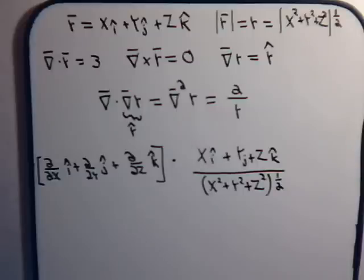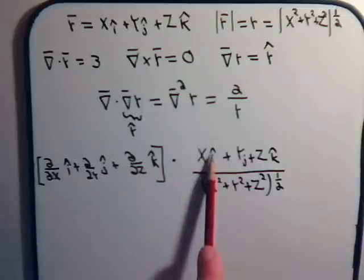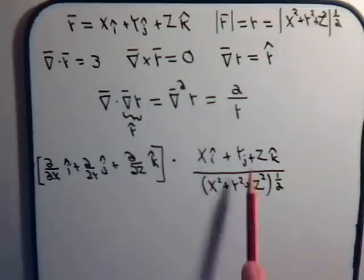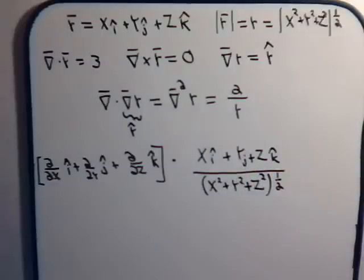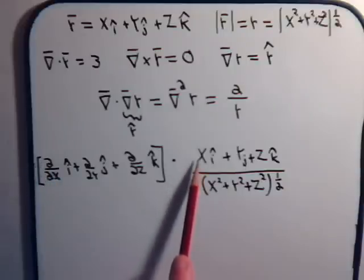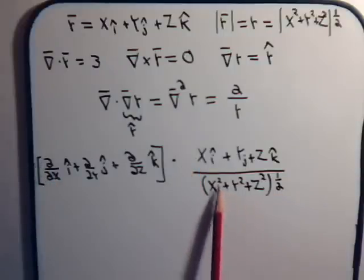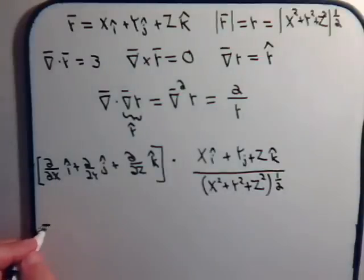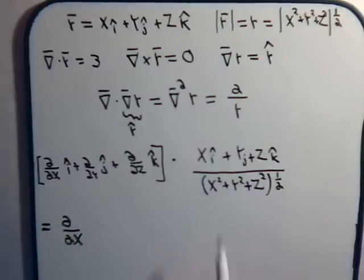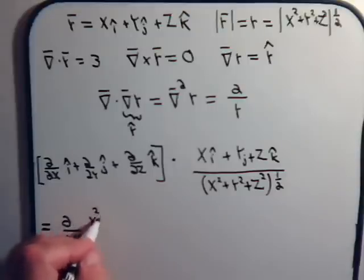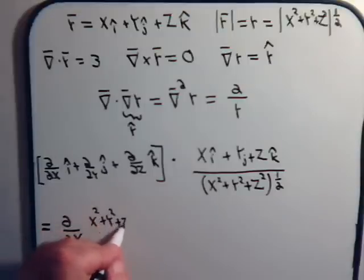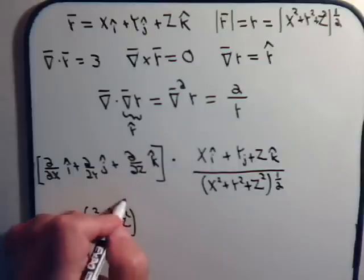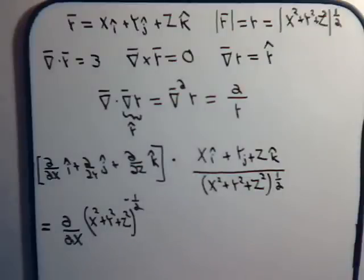Let's consider the first term. We have i dot i, that's 1, and i dot j and i dot k are both 0. So from the first dot product we're going to have the partial with respect to x of the variable x divided by this denominator. That will equal the partial with respect to x of (x² + y² + z²)^(−1/2) times x.